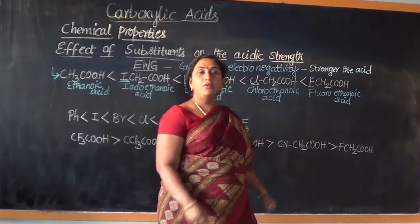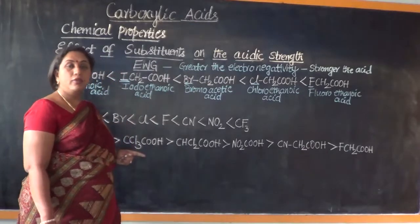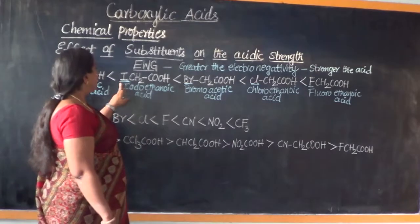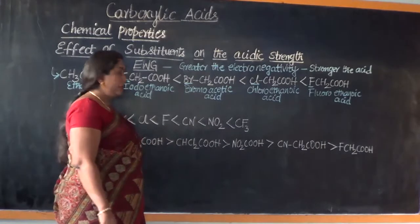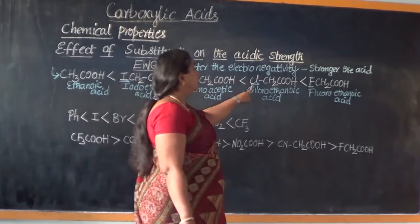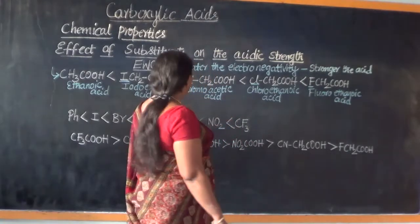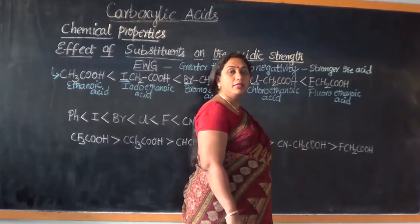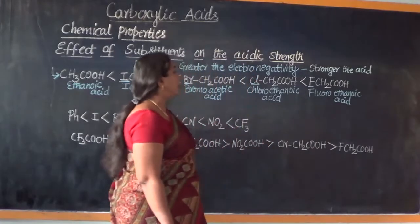In fact, the electronegativity of fluorine is much greater than even oxygen. Therefore, fluoroethanoic acid will be a stronger acid compared to any of the other haloacids. When comparing iodoethanoic acid and bromoethanoic acid, because bromine has greater electronegativity, bromoethanoic acid will be a stronger acid. Similarly, between bromine and chlorine, chlorine is more electronegative, so chloroethanoic acid will be a stronger acid than bromoethanoic acid. And between chlorine and fluorine, fluorine is strongly electronegative, so fluoroethanoic acid is a stronger acid than chloroethanoic acid.